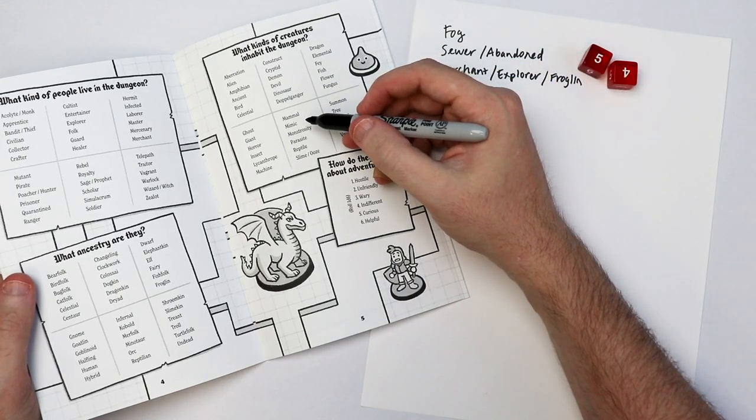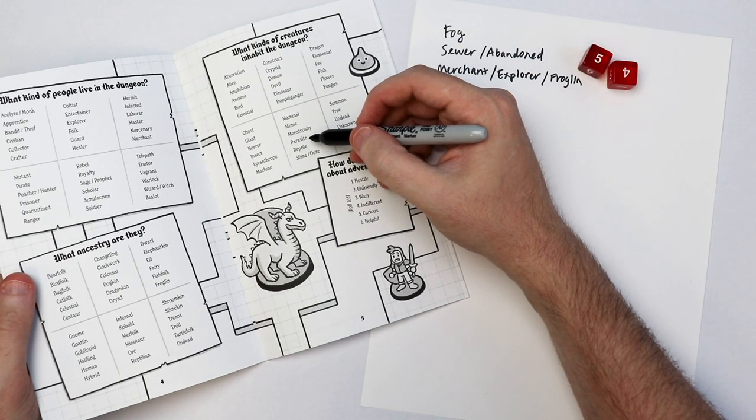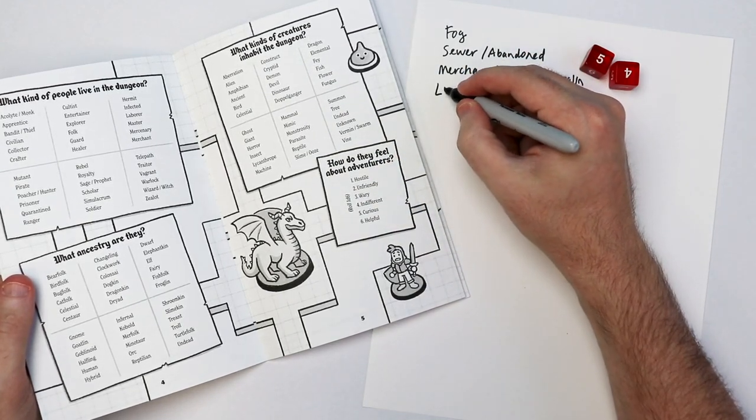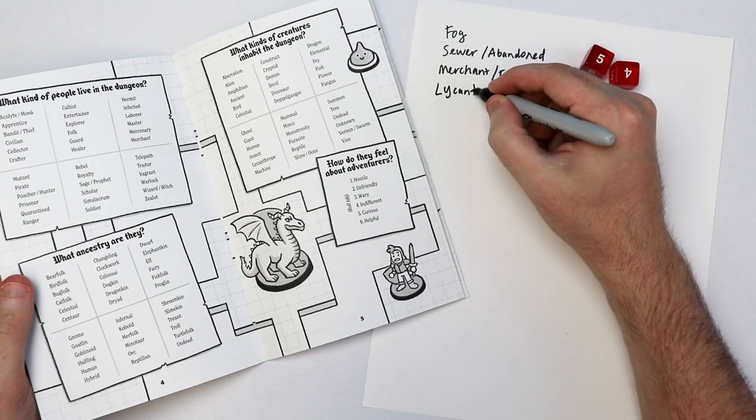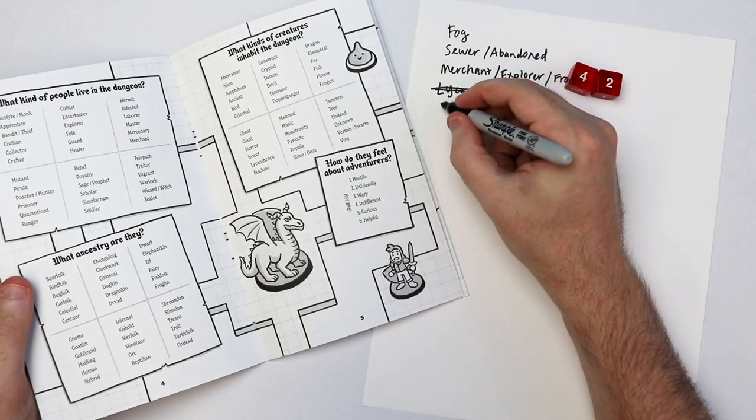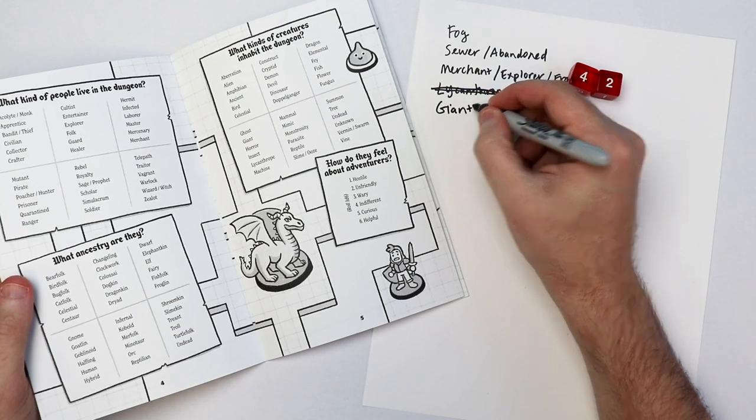Really, I'm just answering questions that will explain what this dungeon is all about. Stuff like where is the dungeon located, who lives there, what kind of treasure and obstacles the players will find when they explore it. So I rolled stuff like this dungeon is an abandoned sewer, there is a froglin explorer searching for something.